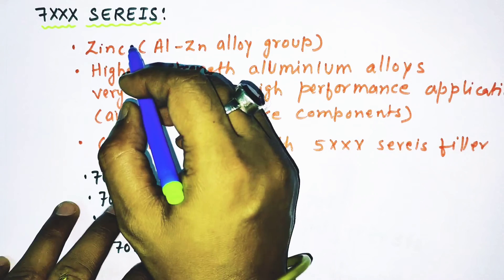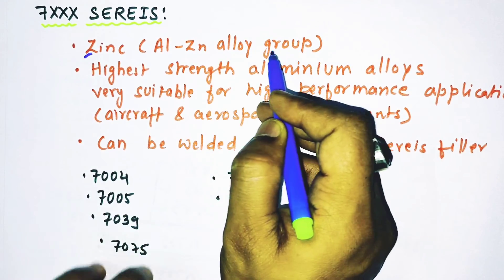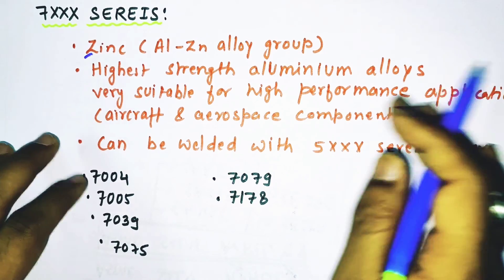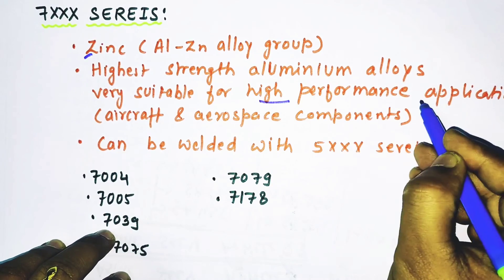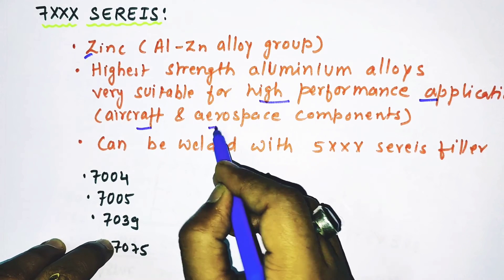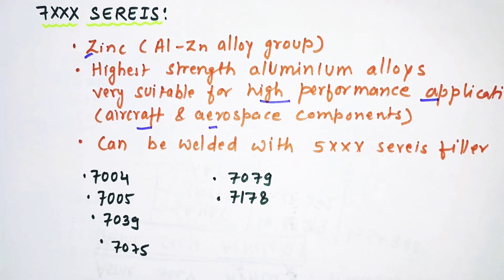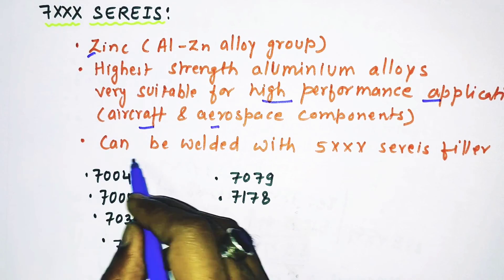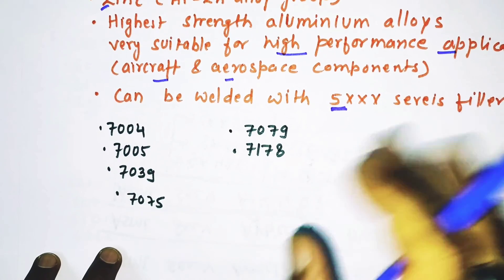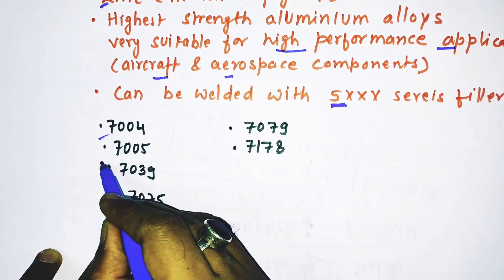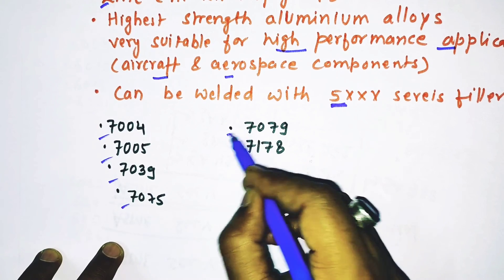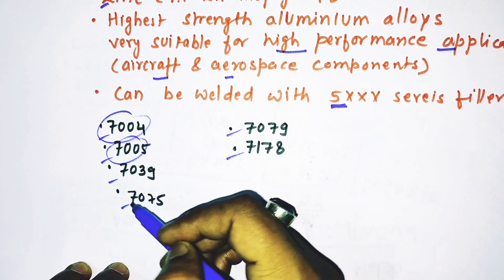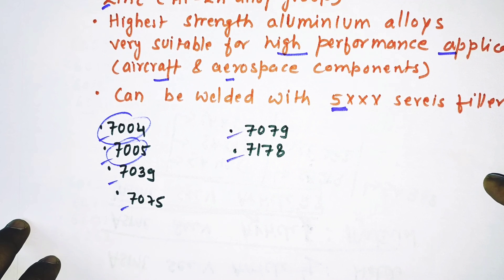The 7xxx series has zinc as the alloying element, known as the aluminum-zinc alloy group. It has the highest strength among all aluminum alloys, making it very suitable for high-performance applications like aircraft and aerospace components. It can be welded with 5xxx series filler metals. Important alloys in this group include 7004, 7005, 7039, 7075, 7079, and 7178. For detailed applications of these alloys, you can visit the website weldingandndt.com. I hope you enjoyed this video — thank you very much.